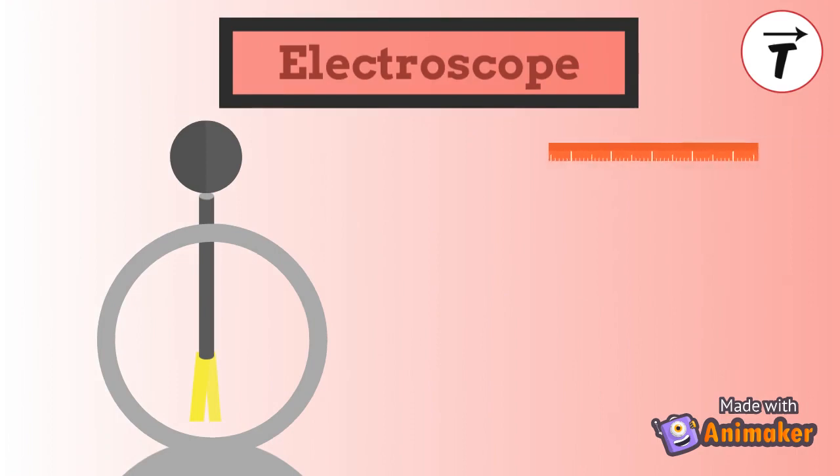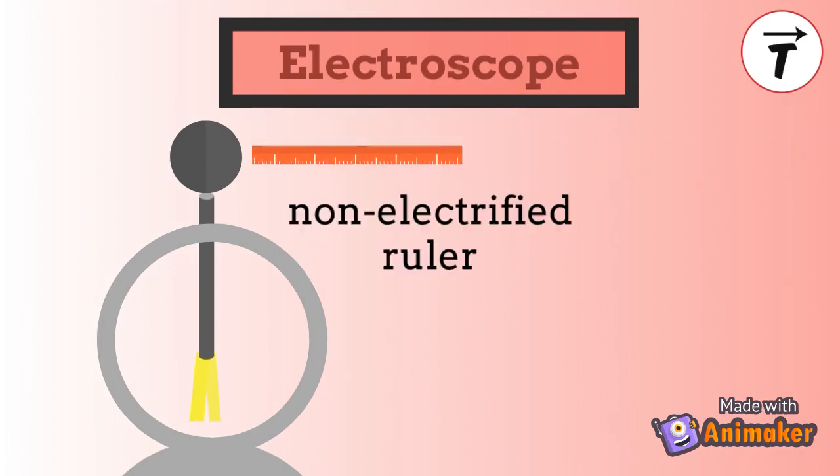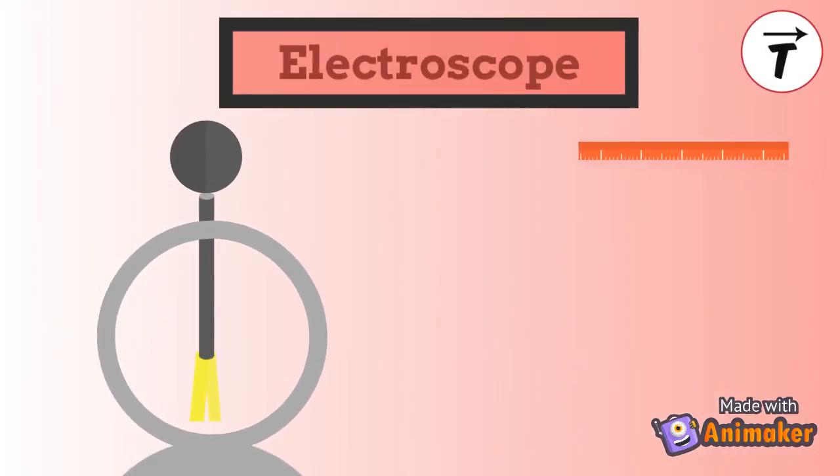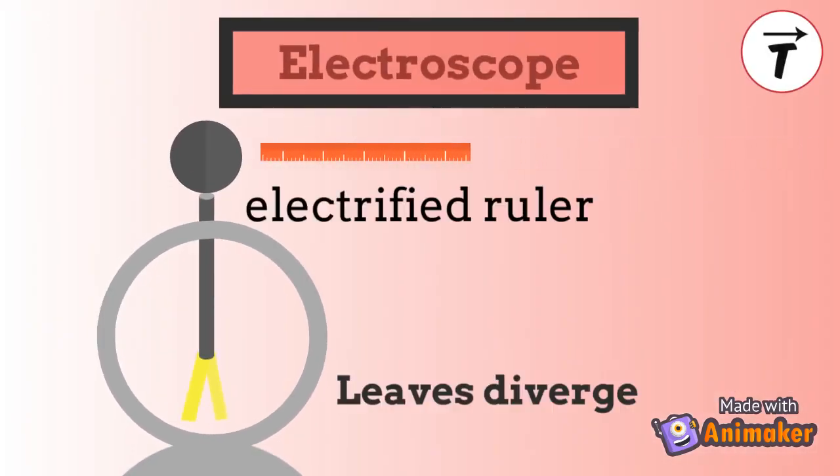When an unelectrified ruler is brought near the knob of the electroscope, the metallic leaves don't diverge. The leaves diverge when the ruler is electrified.